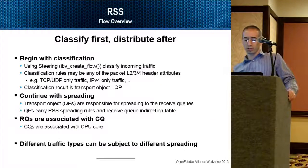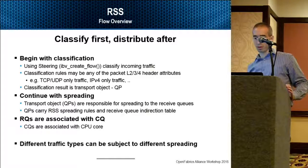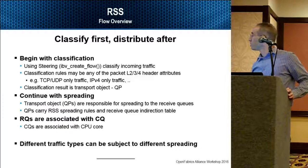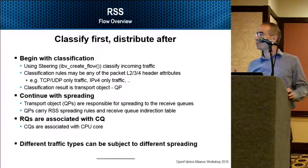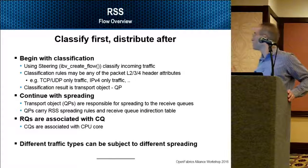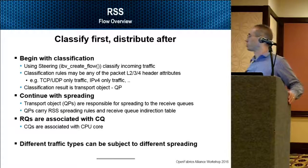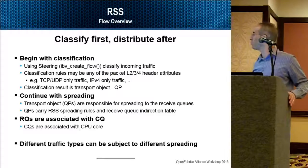RSS is built of two basic operations: first we classify, then we distribute. Classify means you specify which type of flows go where — for instance, IPv4 traffic goes to a specific queue and IPv6 to a different queue. Then we do the distribution. Different distributions can be defined for each classification, so IPv4 can enjoy a different distribution than IPv6.